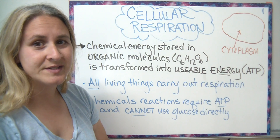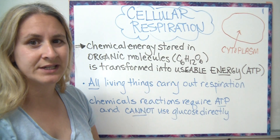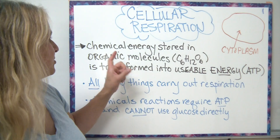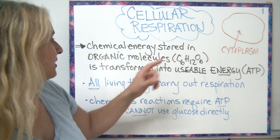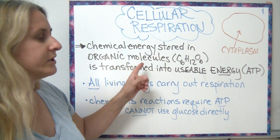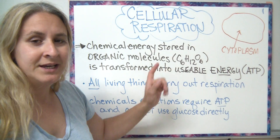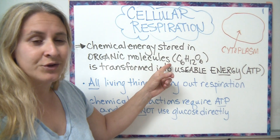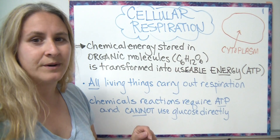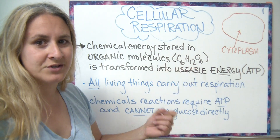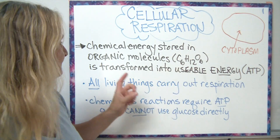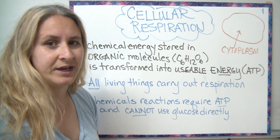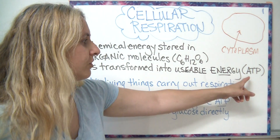It's been mentioned before as a life process but we need a real strict definition for it now. Cellular respiration is defined as chemical energy stored in organic molecules. Typically we're going to talk about storing that energy in glucose, C6H12O6. Remember organic has carbon and hydrogen, and then that energy is transferred into a usable energy called ATP.